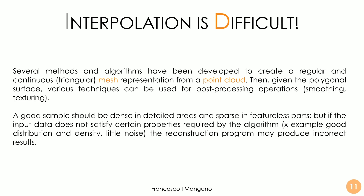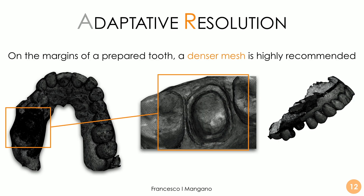A good sample should be dense in the critical area and sparse in less important parts. For example, if a natural tooth has been prepared and the dental technician needs to draw the margin line, it is very important to get as much information as possible from that area. A dense mesh with many triangles there will make the margin line more visible, helping the technician avoid mistakes when drawing the finishing line.